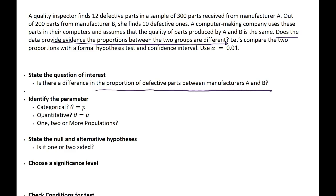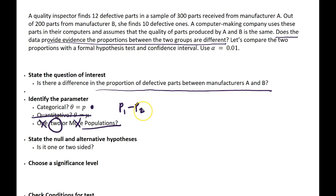Next, we want to identify the parameter. We ask ourselves: is our data categorical or quantitative? Do we have one, two, or more populations? In this example, our data is categorical — a part is either defective or not defective — so the characteristic can only be described using a proportion. And we have two populations: parts from manufacturer A and manufacturer B. This implies that our parameter is going to be P1 minus P2, the difference between the population proportions.